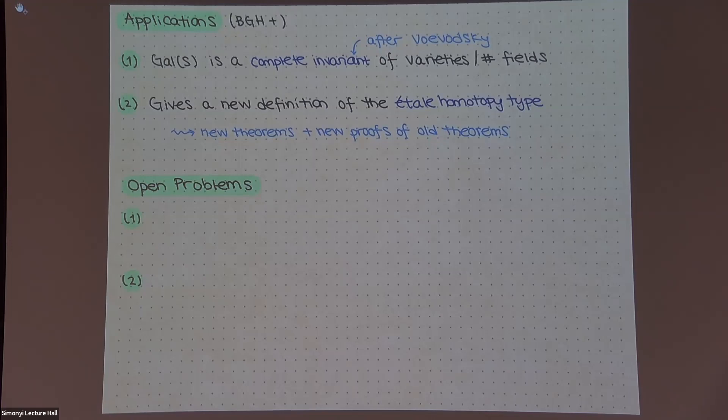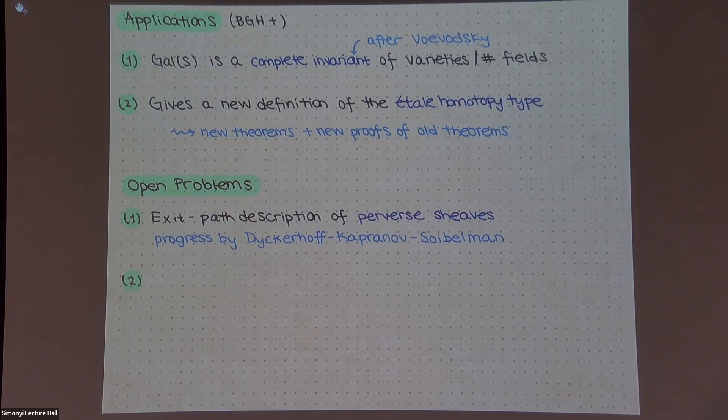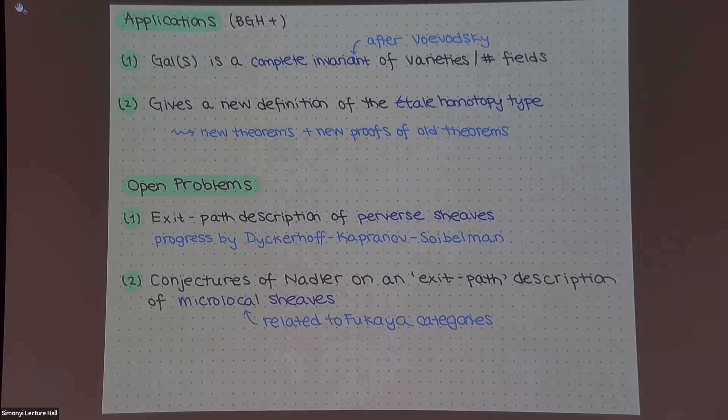So some things related to these ideas that, I don't know, I'd like to think about are, well, it turns out that it's not maybe so clear how to give such a combinatorial or exit path description of perverse sheaves. There's some progress about this in the case of surfaces by Kapranov-Soibelman and other people in low dimensions. But it's, you know, that's something that would be useful to know. And Nadler also has some conjectures about some exit path descriptions of microlocal sheaves. And yeah, that's maybe how I got interested in these microlocal sheaves. But these are related to Fukaya categories. So maybe that's of interest. And okay, that's all I have to say.